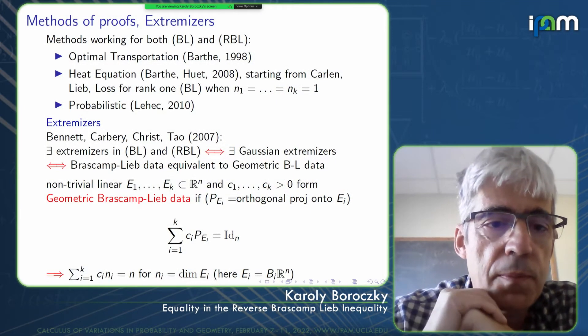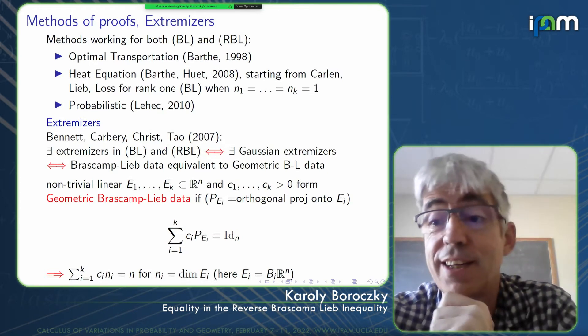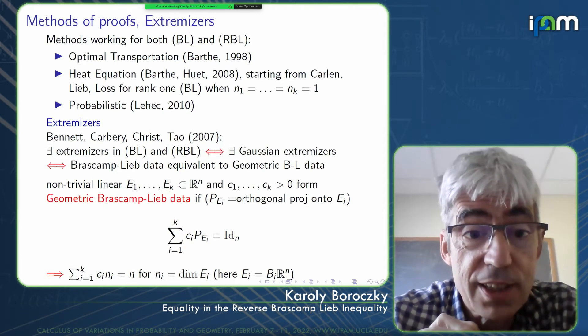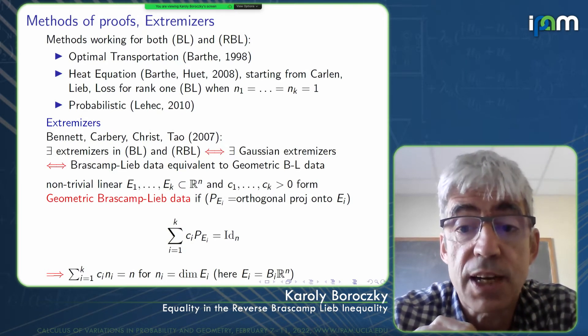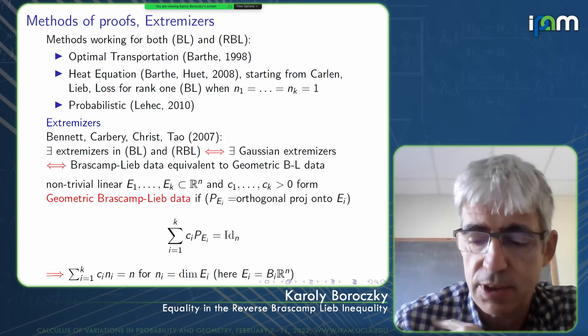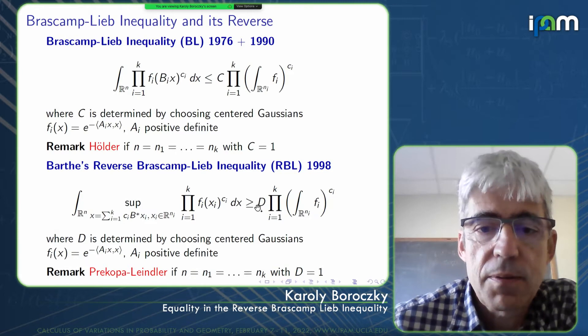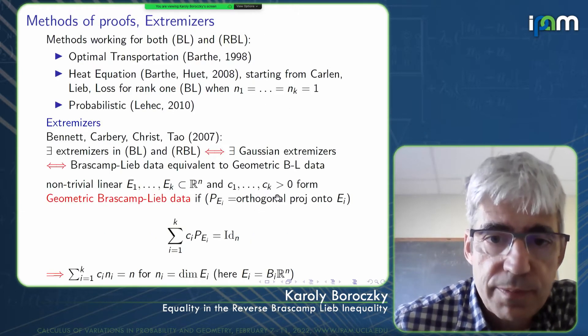My main interest in this talk is considering extremizers. The theory which led to understanding when extremizers might be expected was developed in the landmark paper by Bennett, Carbery, Christ, and Terence Tao — so there is a connection to UCLA. They showed that extremizers for these inequalities exist if and only if there are Gaussian extremizers; otherwise the constants in the inequality are just limits.